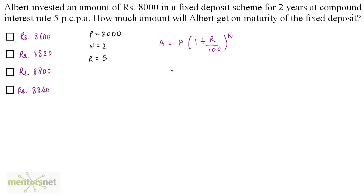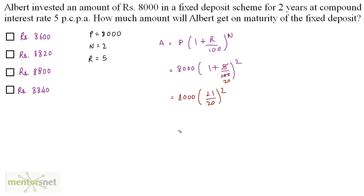Substituting the data: A = 8000 × (1 + 5/100)^2. Since 5/100 = 1/20, this becomes 8000 × (21/20)^2. So we have 8000 × 441/400.